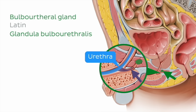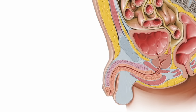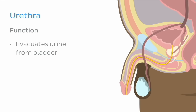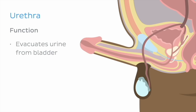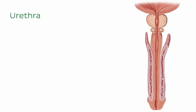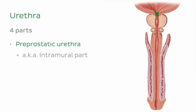Since we've mentioned the urethra quite a bit up to this point, let's take a few minutes to dive deeper into this structure. The male urethra is a muscular tube that is both part of the urinary system by evacuating urine from the bladder, and the reproductive system as a passageway for male ejaculate. The male urethra, which we can see in this coronal section, is comprised of four parts. The first is the pre-prostatic urethra, or intramural part, which is the initial part of the urethra that starts just after the internal urethral orifice.